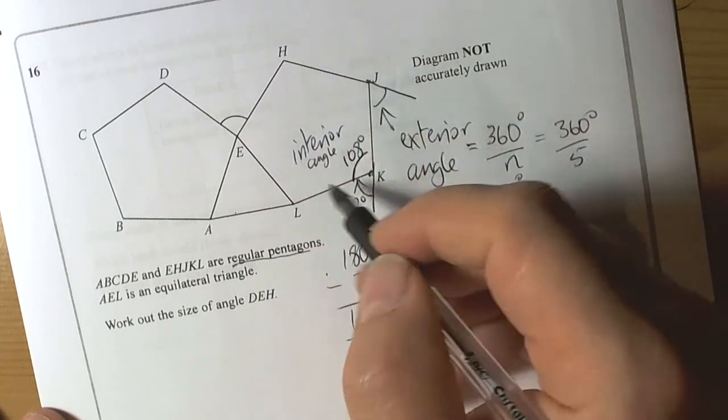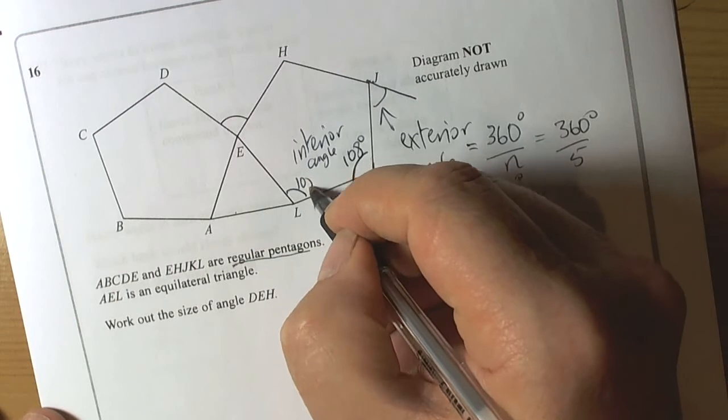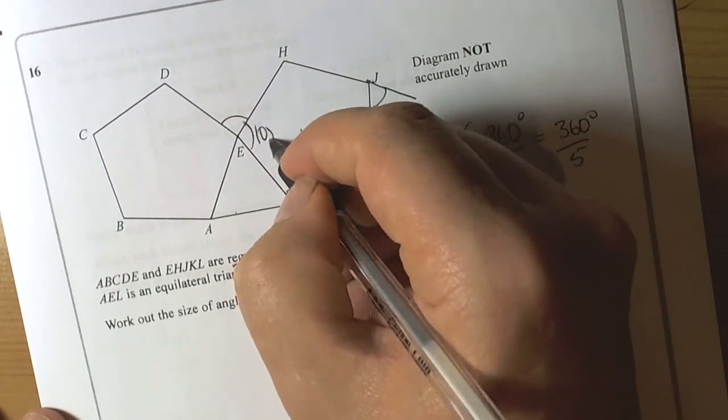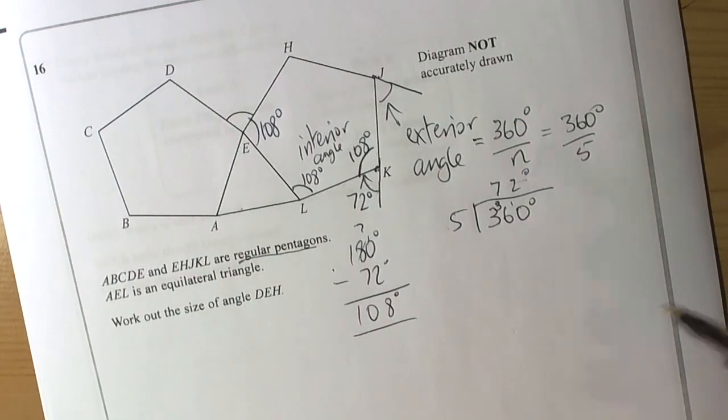Because this question is about regular shapes, we know every angle inside this pentagon is 108 degrees. I've not read the question yet. I'm just filling information in, because I know that it's going to help me to do the question somewhere.